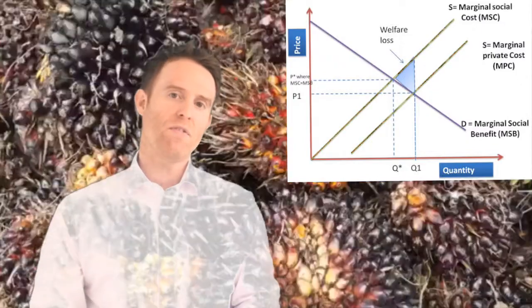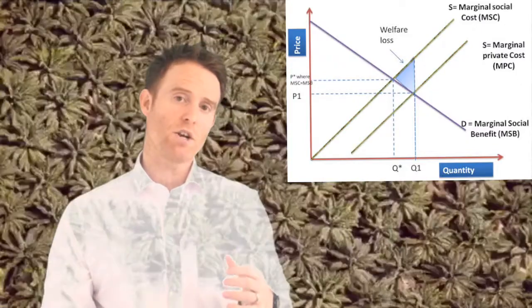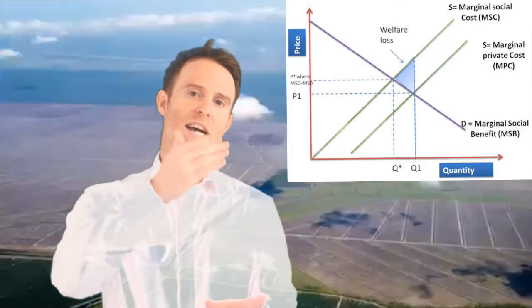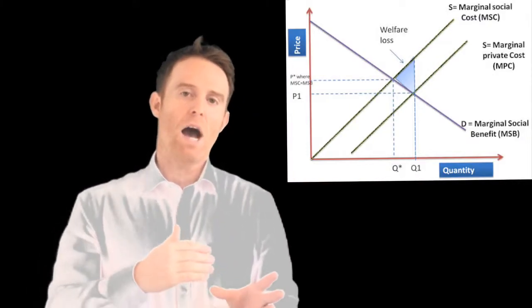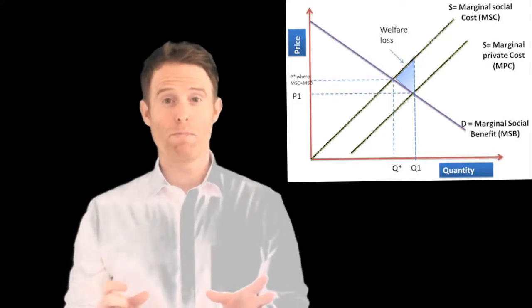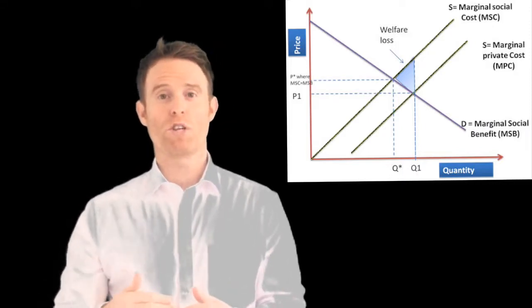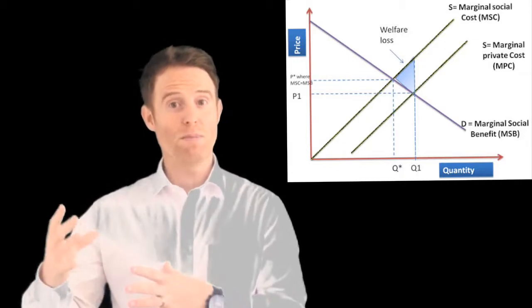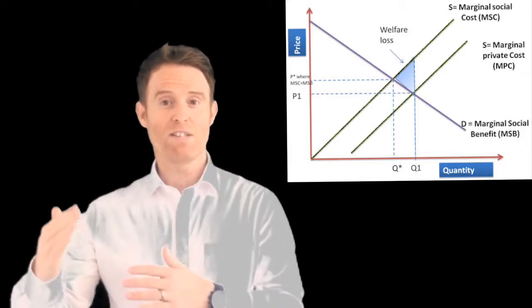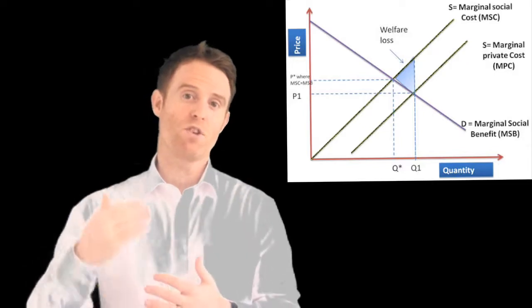So if you look at Q*, that is where society would prefer it to be produced at. And Q1 is where it's currently being produced at. And the reason why it's being produced at Q1 at the moment is because the cost to the private industry, or the firms that are involved in the transaction, is much lower than the cost to the environment, the cost to society.